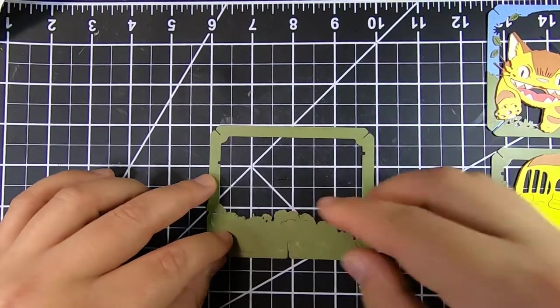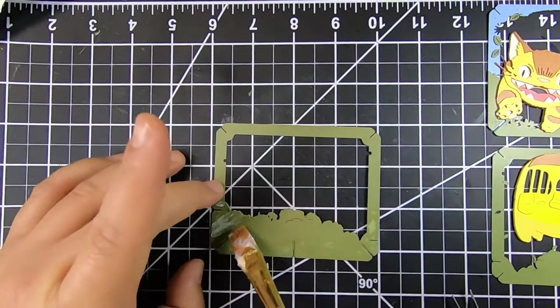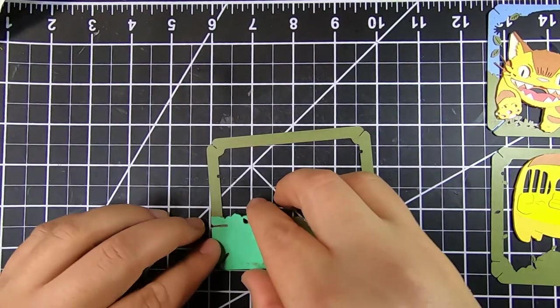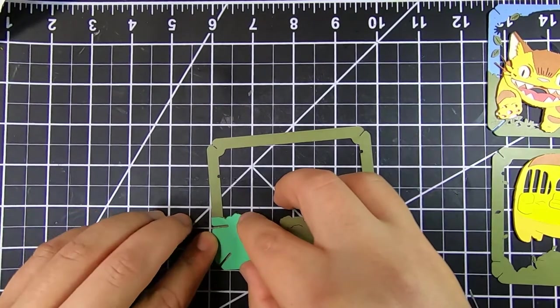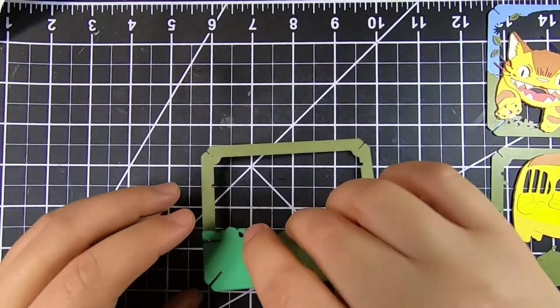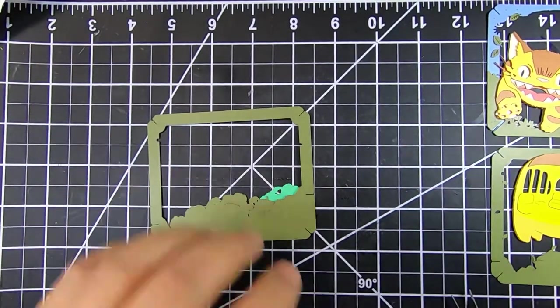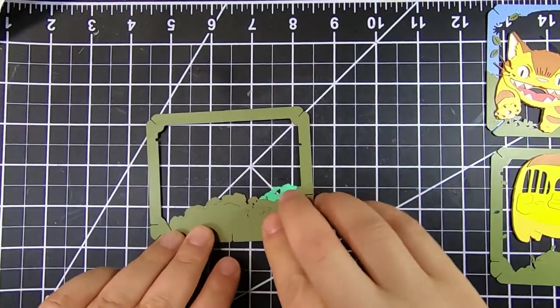The last thing you want to do with paper is use a dull knife because what happens is that you're going to start getting rips in the paper or what you'll actually end up having is kind of like a white edge just because it's a dull edge. Your edges will actually get creased and it looks very messy and dirty so always use a sharp exacto knife.